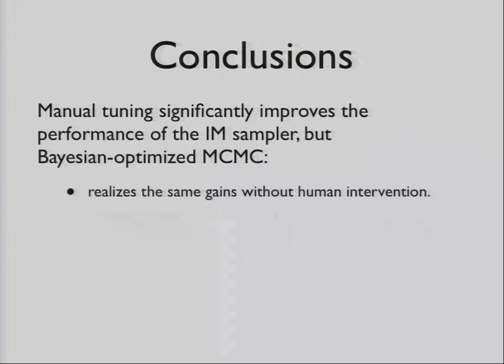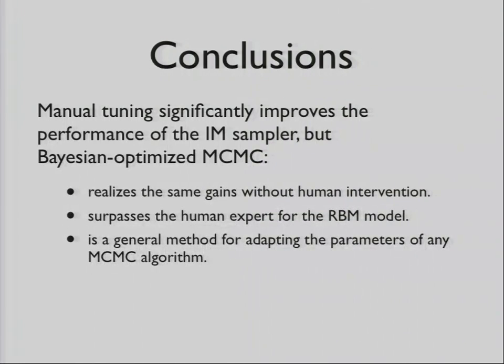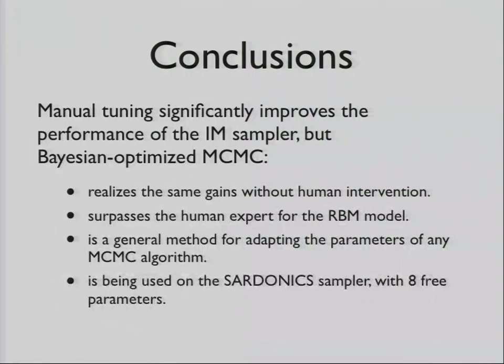Conclusions. Essentially, manual tuning does help a lot in this particular setting. But Bayesian optimization realizes the same gains without any kind of human intervention. And for one model, the more complicated one, the one that was harder to tune, we did significantly better. The nice thing is that it's a general method for adapting parameters of any MCMC algorithm, although it is actually complementary to the Gaussian stuff and the stochastic approximation type methods from before. And I'm happy to say that we've come up with a new sampler called Sardonyx, which is more general than the IM sampler. It works for unconstrained state space distributions, so the full Ising model state space, using the same kind of principle as saw links and saw walks. And this one has eight parameters, but it didn't have to be tuned by any human.